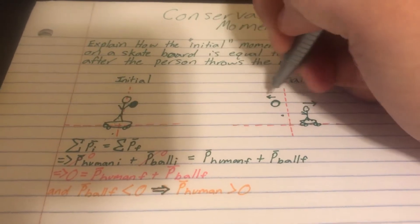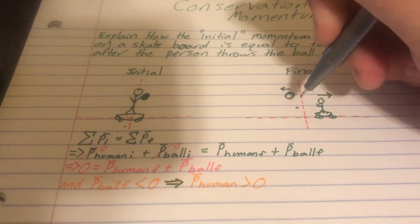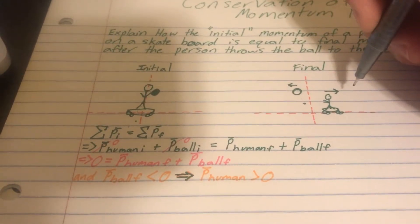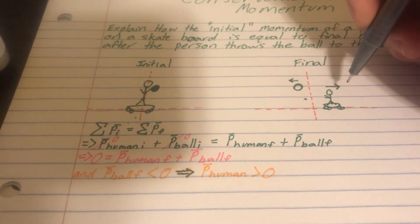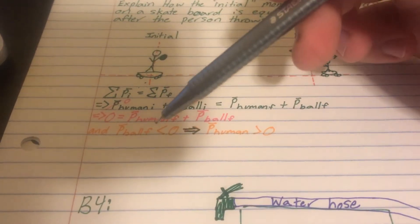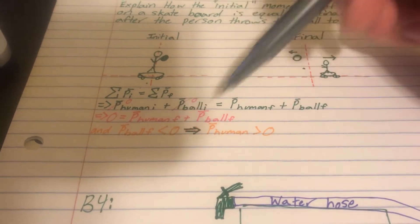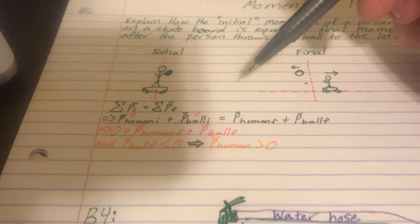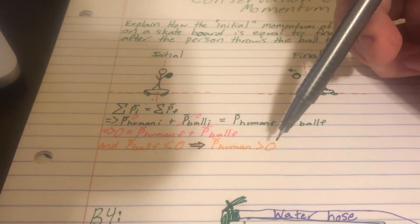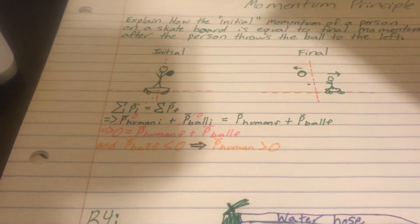the ball has momentum going this way, which pushes the human in the positive direction. That is why the momentum of the ball final is less than zero because it's moving in a negative x direction, and the momentum of the human is greater than zero because it's moving in the positive direction.